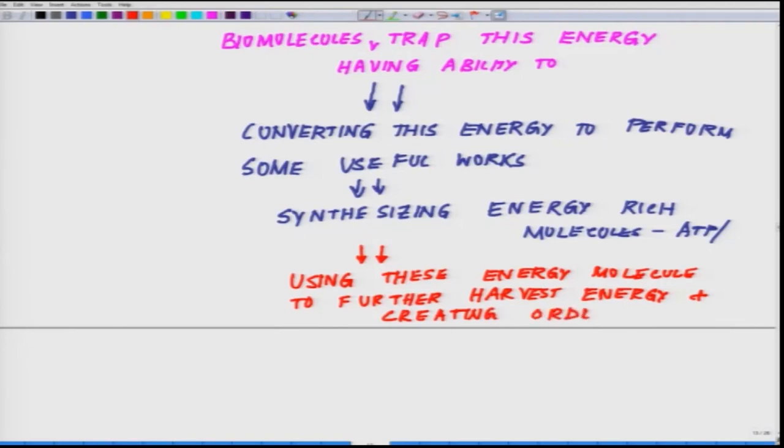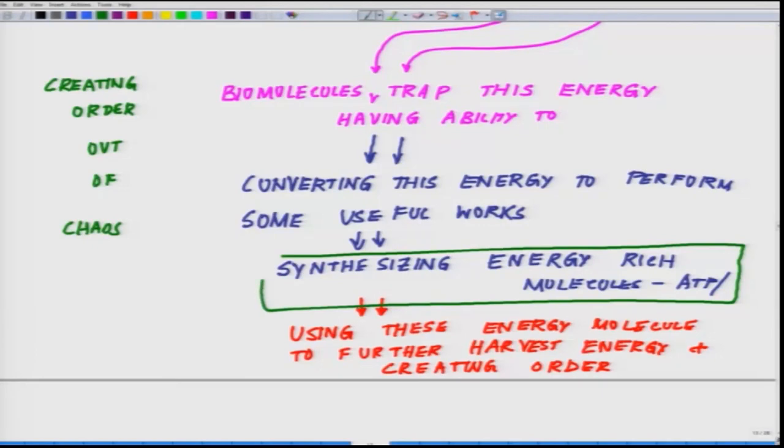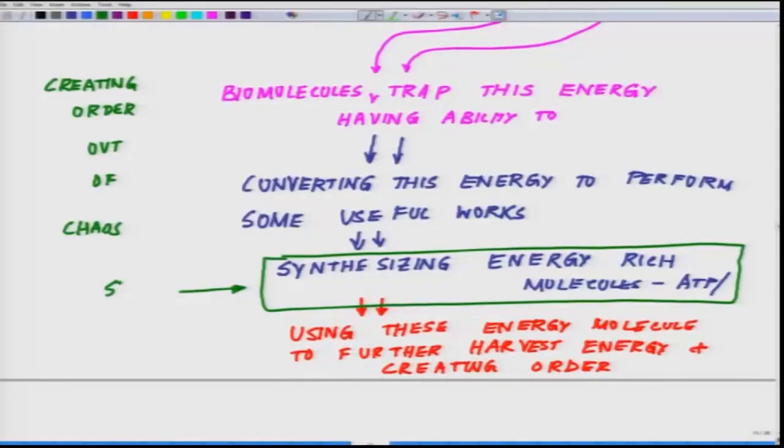If you look at this whole process in a bird's eye view, this is a process where we are creating order out of chaos. Why chaos? Whenever we talk about synthesizing energy-rich molecules, we are talking about a process where using enzymes and other supporting molecules, we are self-assembling molecules, particular kinds of molecules—it could be ATP, NADPH, anything.